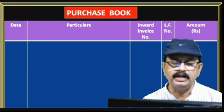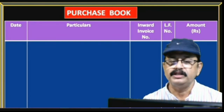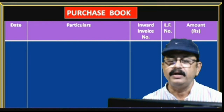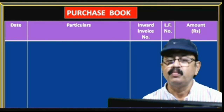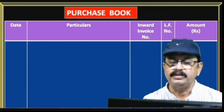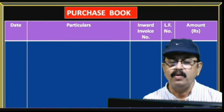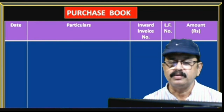The inward invoice is the document used to record credit purchases in the purchase book. It serves as evidence and proof for the credit purchases. Now let me explain one example problem to understand how to prepare the purchase book.